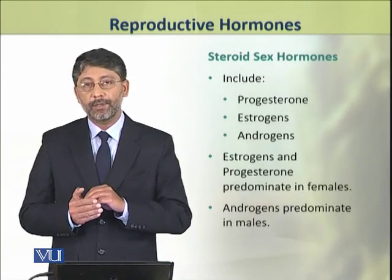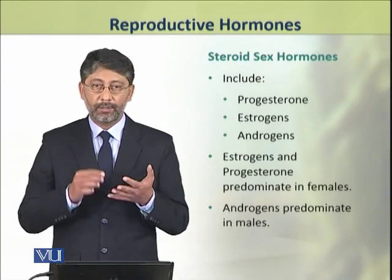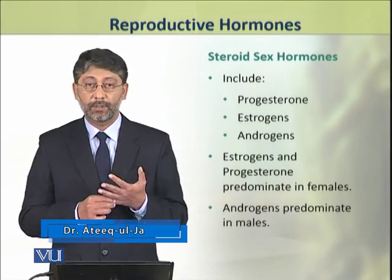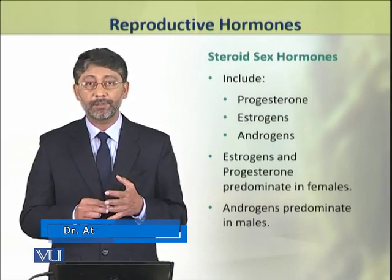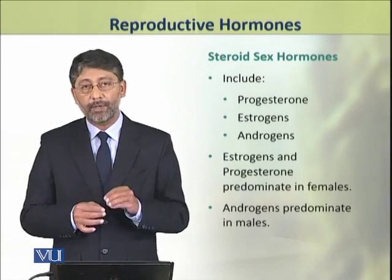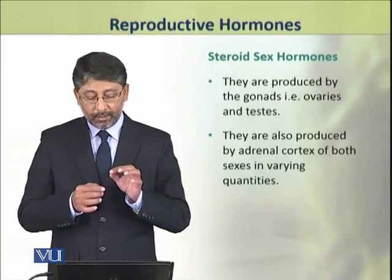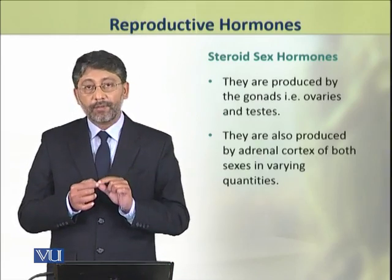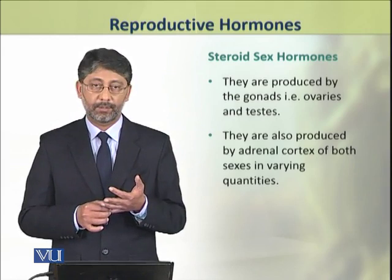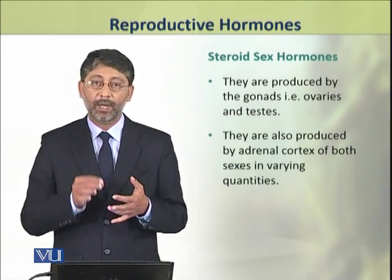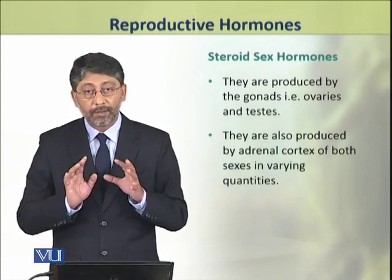First we shall discuss in detail the steroid sex hormones, which include progesterone, estrogens and androgens. Progesterone and estrogens predominate in female animals, while androgens predominate in male individuals. The steroid sex hormones are produced by the gonads — that is, testes and ovaries. Small quantities of these hormones are also produced by the adrenal cortex of both sexes in varying quantities.